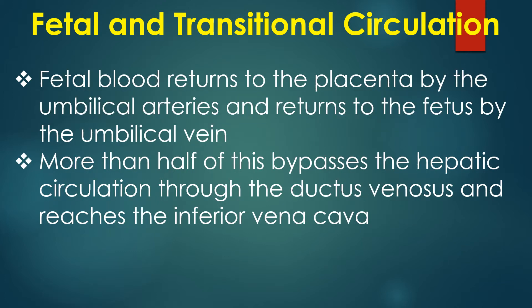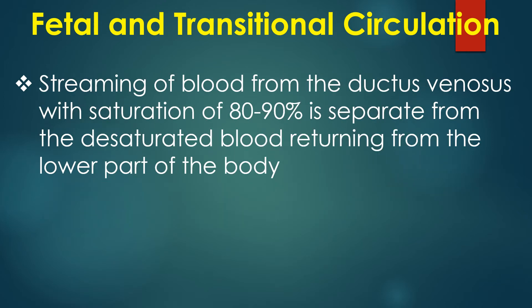Fetal blood returns to the placenta via the umbilical arteries and returns back to the fetus via the umbilical vein. More than half of this bypasses the hepatic circulation through the ductus venosus and reaches the inferior vena cava. Streaming of blood from the ductus venosus, with saturation of 80 to 90 percent, is separate from the desaturated blood returning from the lower part of the body.